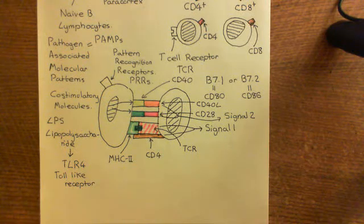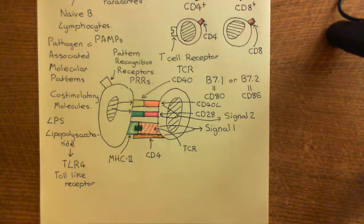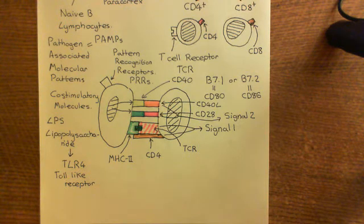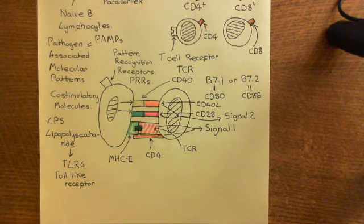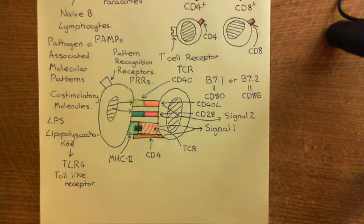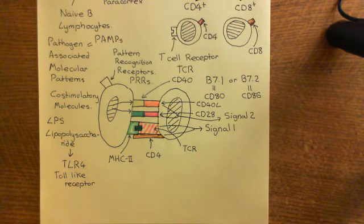Welcome back to this next video in which we are discussing the adaptive immune response and immunosuppressants. We are looking at the humoral adaptive immune response. A professional antigen-presenting cell, such as a macrophage or a dendritic cell, will phagocytose the extracellular or humoral pathogen into a phagosome and then break that pathogen down.